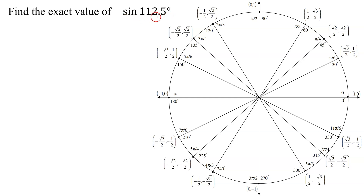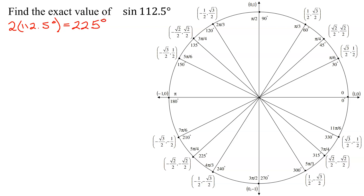Hopefully, I'll be able to use a half angle identity. And to check, we take 2 and multiply it by 112.5 degrees, and we get 225 degrees. Is that angle on my unit circle? Yes, it's right here. So I'm going to be able to use a half angle identity.